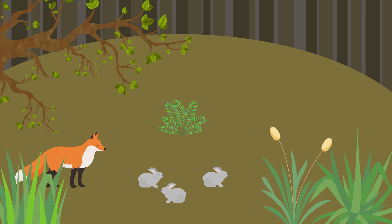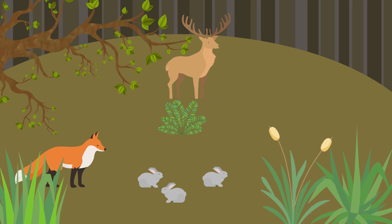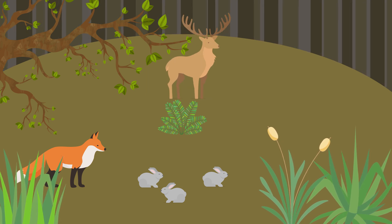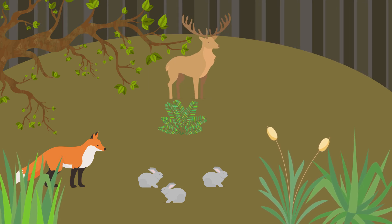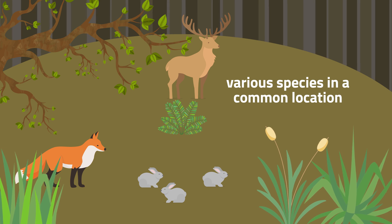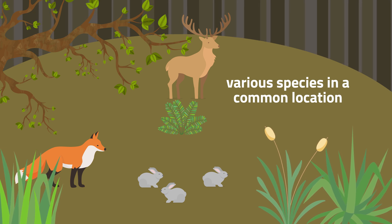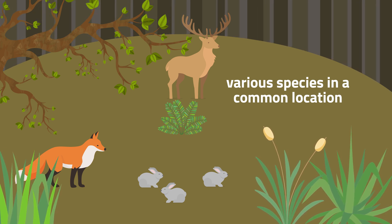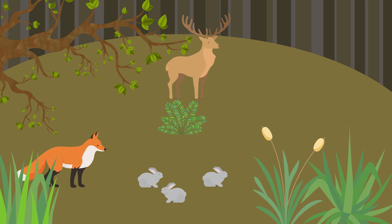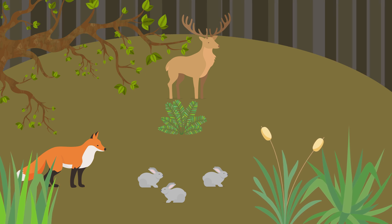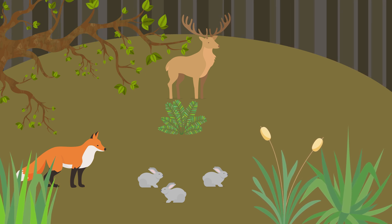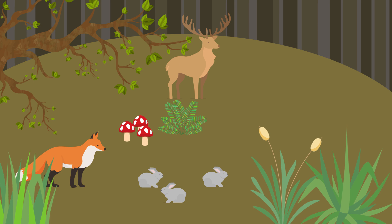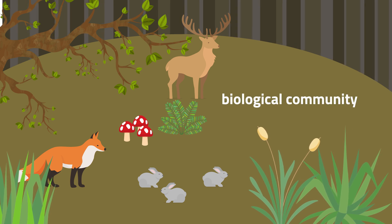Interactions are the effects organisms in a community have on one another. Remember, a community is made up of various species in a common location. For example, a forest of trees and undergrowth plants, inhabited by animals and rooted in soil containing bacteria and fungi, constitutes a biological community.